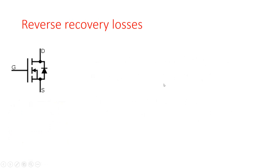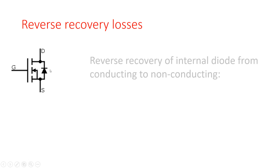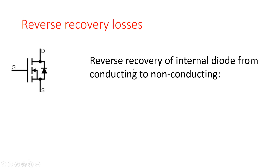The last loss type is the reverse recovery losses. These arise because the body diode has a parasitic capacitance in practice. They occur when the body diode transitions from conducting to non-conducting. The reverse recovery losses are calculated as QRR × UDS × switching frequency, where QRR is the charge of the parasitic capacitance of the body diode. This value QRR can also be found in the MOSFET datasheet.